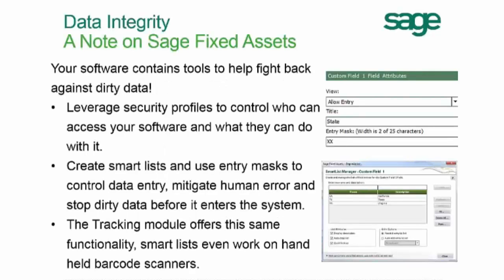So, how can we fight back against dirty data? Your Sage Fixed Assets solution has tools to help you win this battle. You can set up security profiles to control what asset information your different users can access and what they can do with it. Customize fields and use entry masks and smart lists, which allow you to control the data entry process, removing the potential for human error and typos. You can even digitize and attach multiple documents and images to each asset, like invoices or warranty information. And finally, using Sage Fixed Assets tracking to begin performing physical inventories of your fixed assets. This will allow you to load your asset data onto a scanner, then go out into the field to ensure your information is accurate and updated if it isn't.